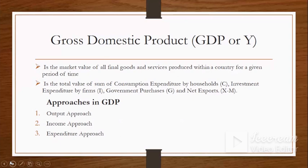Gross domestic product is the most commonly used measure of a country's national income. GDP may be defined as the total of all economic activity in a country, regardless of who owns the productive assets. GDP has to do with physical location — where it is actually made, domestically — and it is the market value of all final goods and services produced within a country for a given period of time.